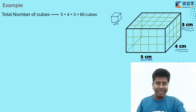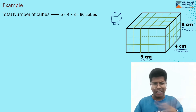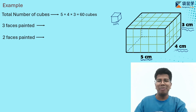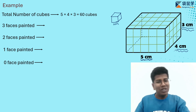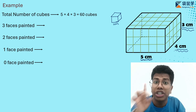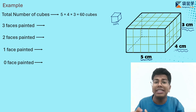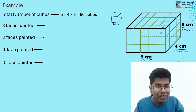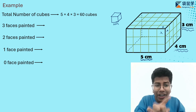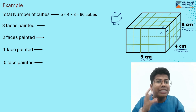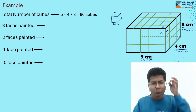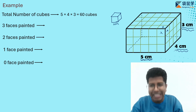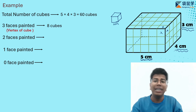Now, if this cuboid is painted from all sides, how many cubes will have 3 faces painted, 2 faces painted, 1 face painted, and 0 faces painted? For 3 faces painted, the cube at the corner has this face, this face, and this face painted. The cubes with 3 faces painted are present at the vertices of the cuboid. A cuboid has 8 vertices, so there are 8 such cubes.